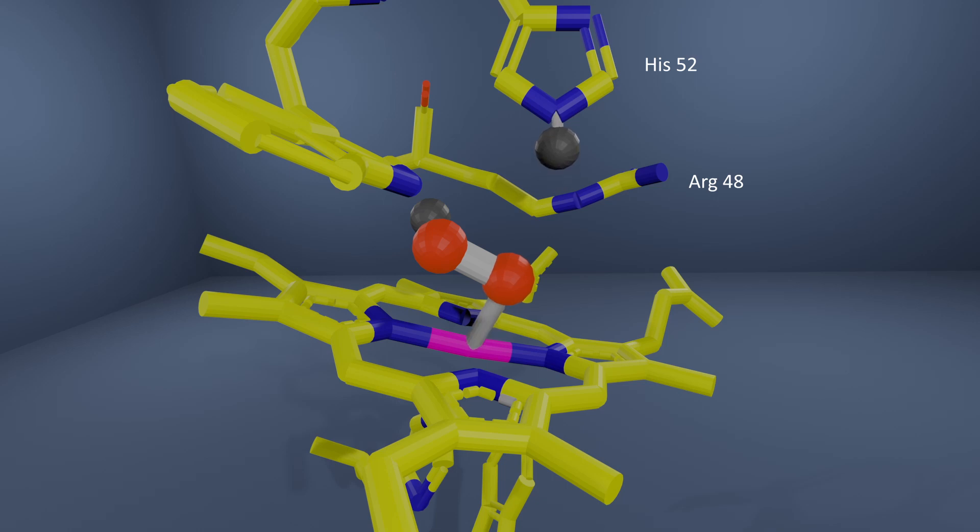The conversion of compound zero to compound one requires protonation of the distal oxygen of the ferric hydroperoxide complex so that formation of the ferryl species can be linked to elimination of the distal oxygen as a molecule of water.